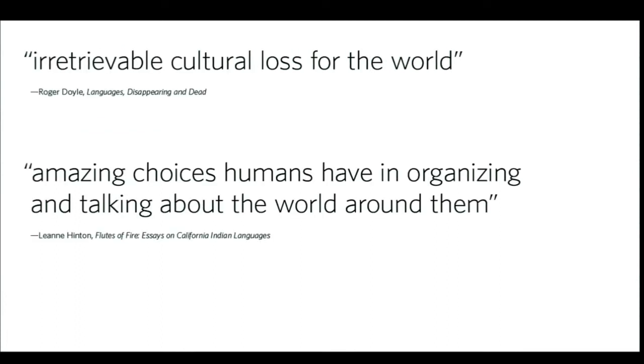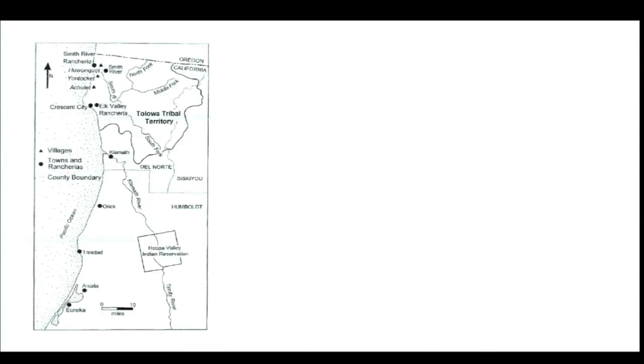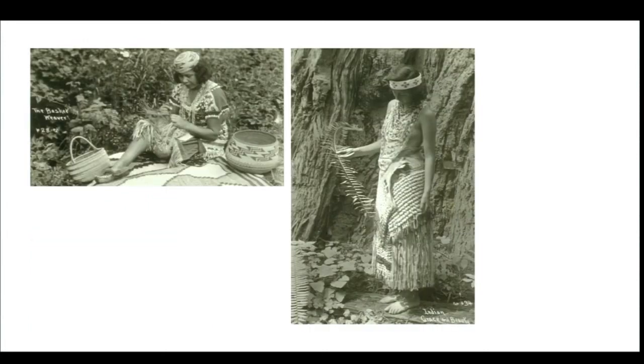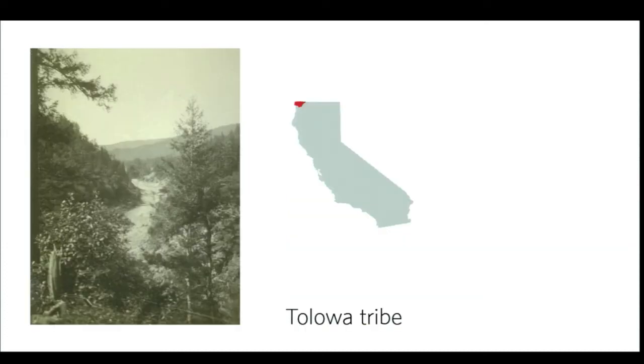The death of a language is an irretrievable cultural loss for the world. Language embodies the culture's worldview, encapsulating the amazing choices humans have in organizing and talking about the world around them. The many California native communities composed a landscape rich with cultural and linguistic diversity for thousands of years — more than a hundred languages were spoken. The Toloa, a northern California tribe of fishers, hunters, and gatherers, lived along the Smith River drainage and nearby coastal plain in the northwest tip of California.